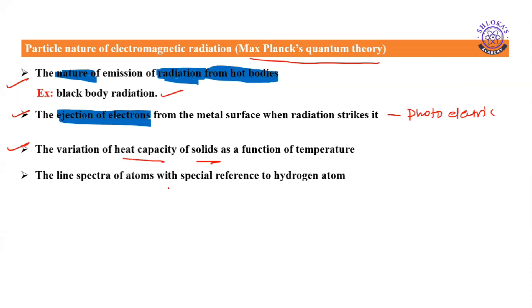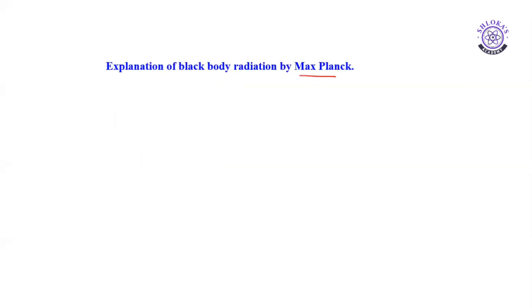The line spectrum of atoms is another important topic in atomic structure — specifically the spectral series of the hydrogen atom — which we will discuss further. Now, the explanation of black body radiation by Max Planck: after completing black body radiation and the effect of temperature on heat capacities, we will summarize all points as Planck's quantum theory. Before going to Planck's quantum theory, it is better to discuss black body radiation.